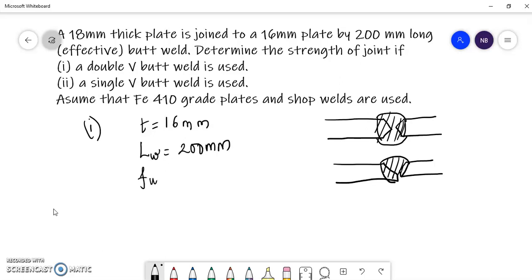The ultimate strength of the plate is 410 N per mm square, and the partial safety factor is to be taken as 1.25 since it is a shop weld. For a field weld we take a higher partial safety factor of 1.5.